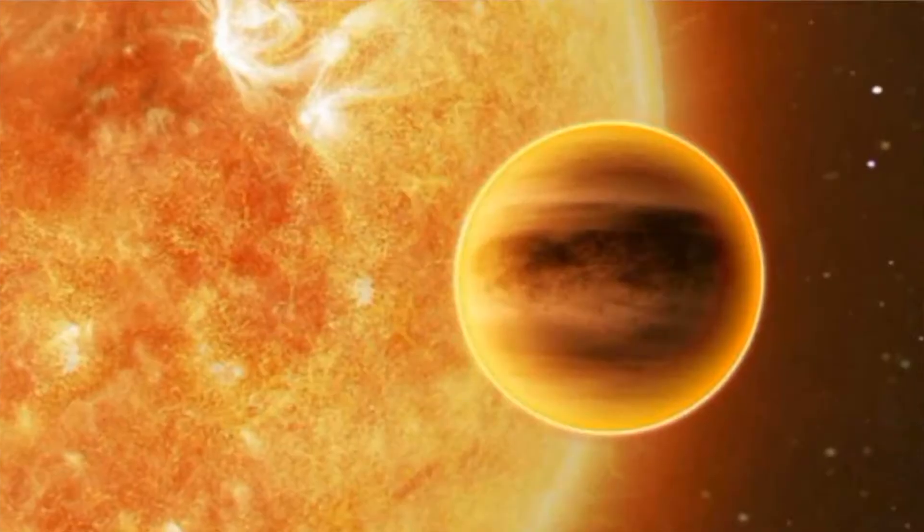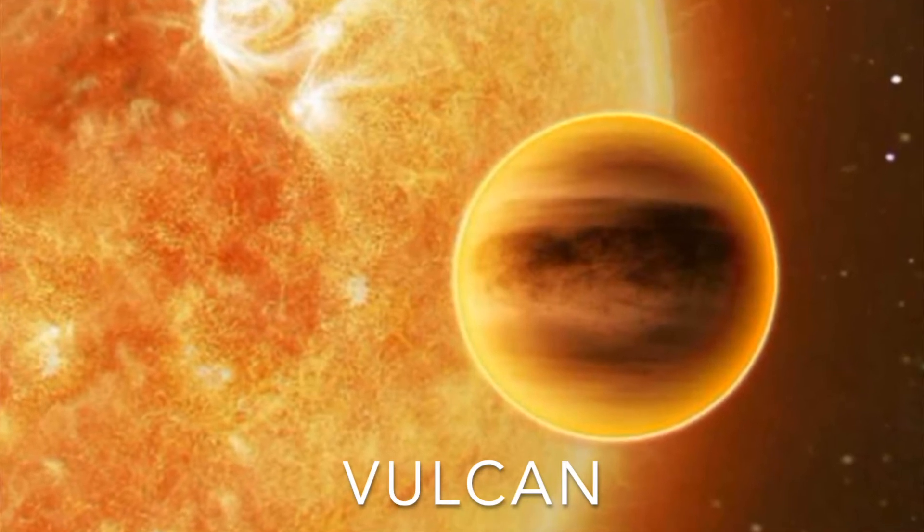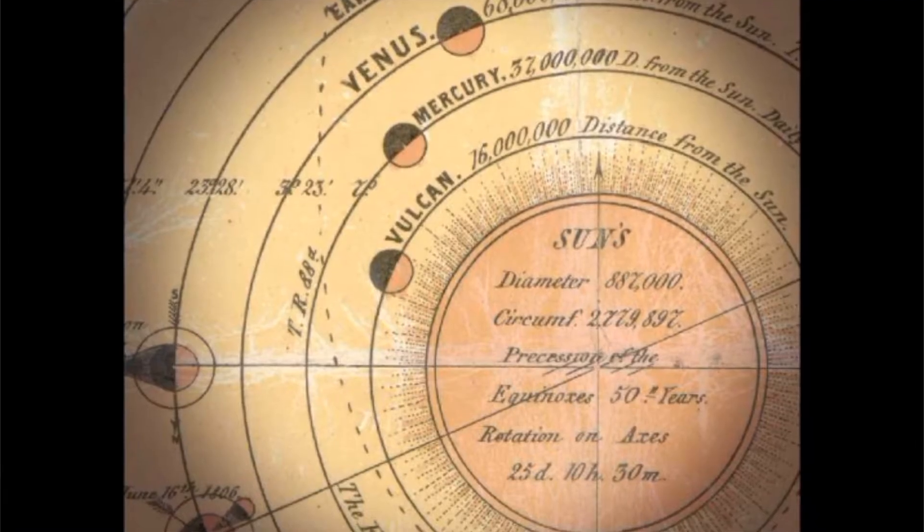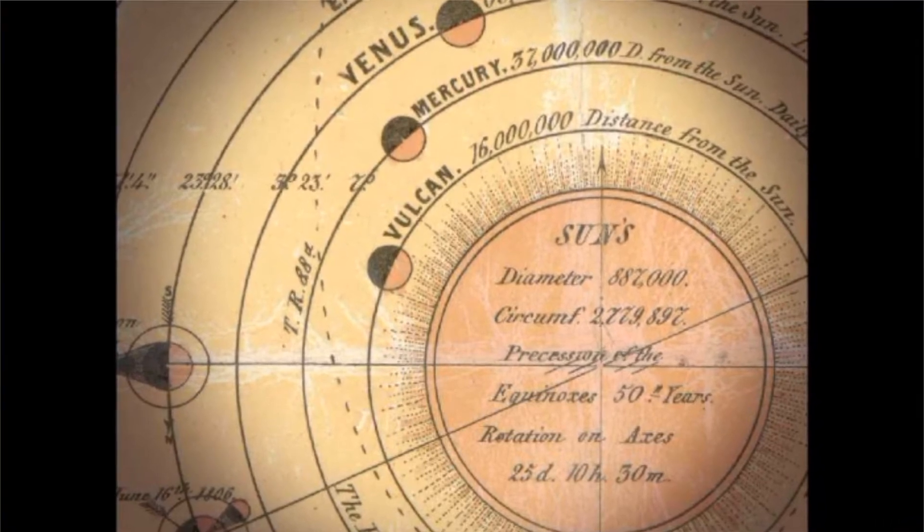One possible explanation is that there might have been an undetected planet even closer to the sun than Mercury itself. The hypothetical planet was named Vulcan after the Roman god of fire since it was thought to lie very close to the sun. But obviously, no such planet was ever found between the sun and Mercury.